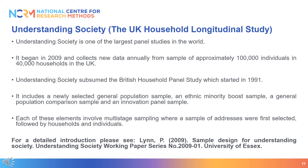Understanding Society, also known as the UK Household Longitudinal Study, is a large panel study which follows households in the UK. This study started in 2009 and subsumed a sample of individuals from the British Household Panel Survey, which already had a complex sample. It also includes a newly selected general population sample, an ethnic minority boost sample, a general population comparison sample, and an innovation panel sample. Each of these elements involves multi-stage sampling where a sample of addresses was selected first, followed by households and individuals. This results in a very complex design, which is explained in detail in the paper cited on the slide.